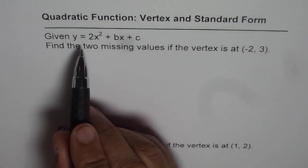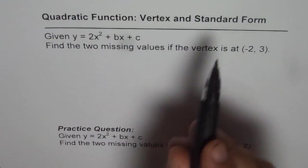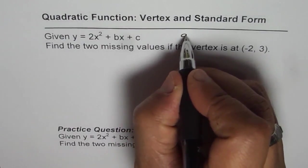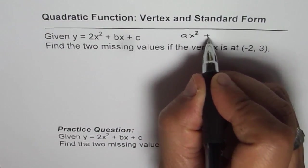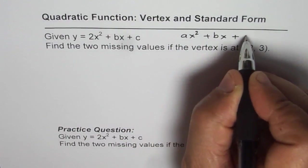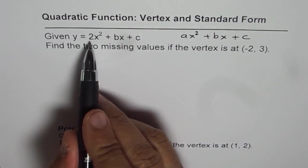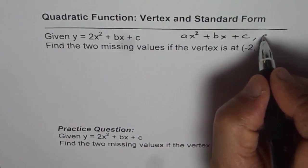Generally, the quadratic equation in standard form can be written as ax² plus bx plus c. Here you see you are already given a equals 2.